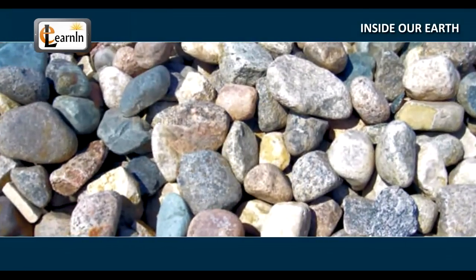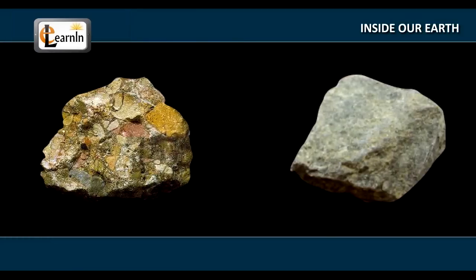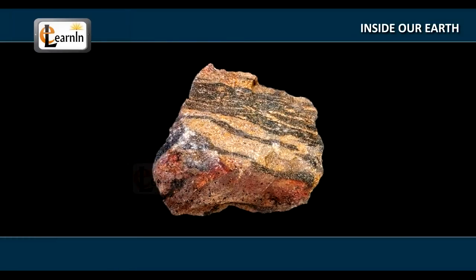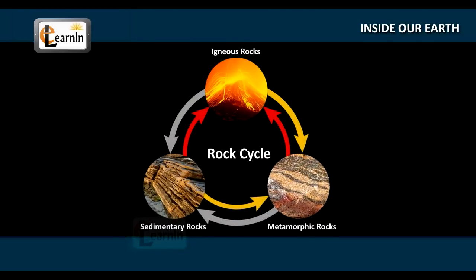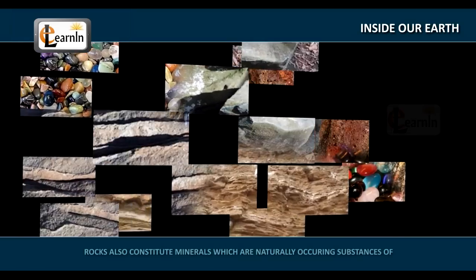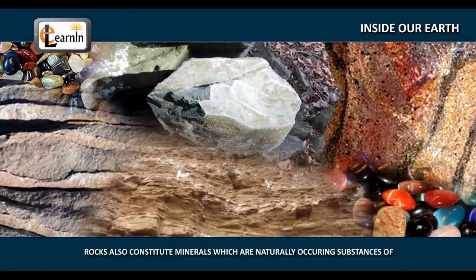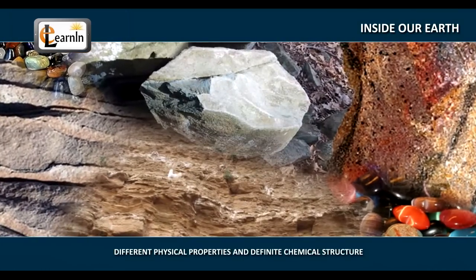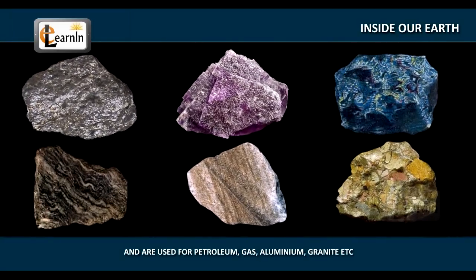You can look around and see the different types, shapes and sizes of rocks. Rock changes its type under external conditions and this process of transformation is called the rock cycle. The first step of the cycle starts when molten magma cools and solidifies into igneous rock. Next, when these igneous rocks are broken down, they transform into sedimentary rocks. The cycle continues when igneous and sedimentary rocks subjected to heat and pressure change into metamorphic rocks. If these metamorphic rocks continue to be under heat and pressure, they melt to form molten magma, thus completing the entire rock cycle. Rocks also constitute minerals, which are naturally occurring substances of different physical properties and definite chemical structure. They are used as petroleum, gas, aluminum, granite, etc.